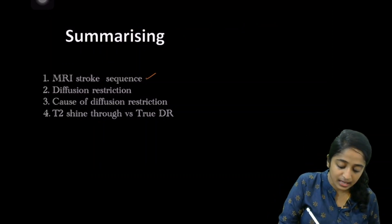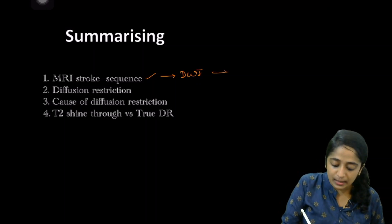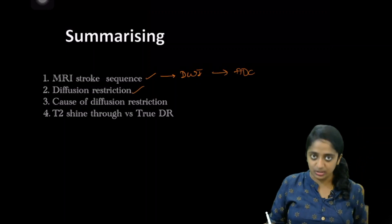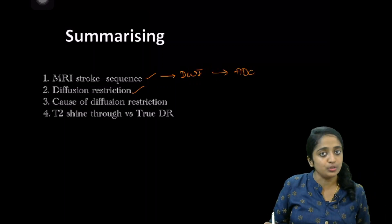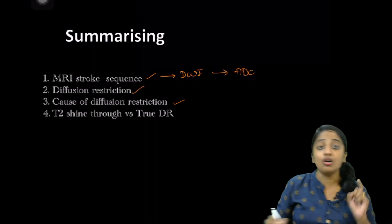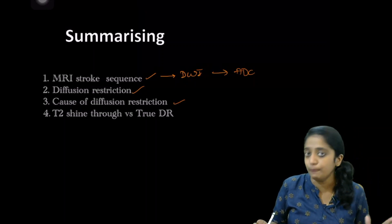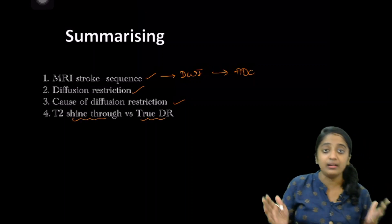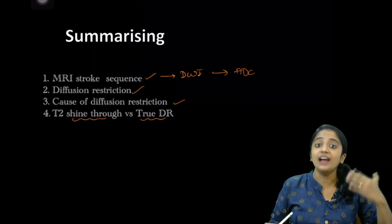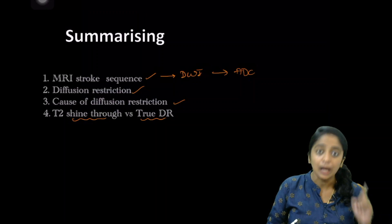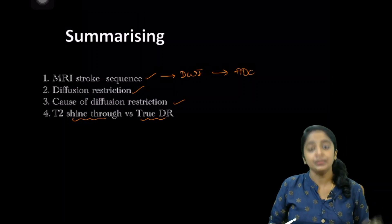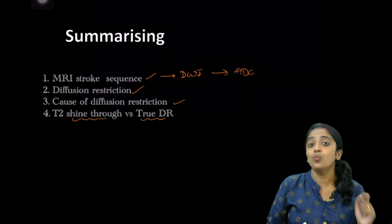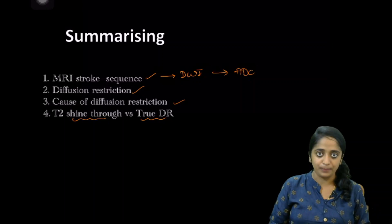To summarize: the stroke sequence of choice is diffusion-weighted imaging, and you should always interpret it along with the ADC map. In acute infarct, look for diffusion restriction — bright signal on diffusion-weighted imaging and low signal on ADC map. The causes of diffusion restriction are cytotoxic edema and decrease in aquaporin-4. T2 shine-through is high signal on diffusion-weighted image without low signal on ADC, due to tissues with long T2 relaxation time — always differentiate from true diffusion restriction. Stay tuned for the next lecture on conventional MRI in acute stroke.